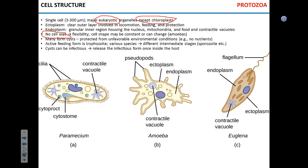Protozoa have two distinct layers of cytoplasm. The ectoplasm, closer to the outside, is responsible for feeding, movement, and protection. The endoplasm is where the organelles are — the nucleus, food vacuole, and contractile vacuole. The contractile vacuole is a really important organelle because of the environment these microorganisms exist in — take amoeba, for example.